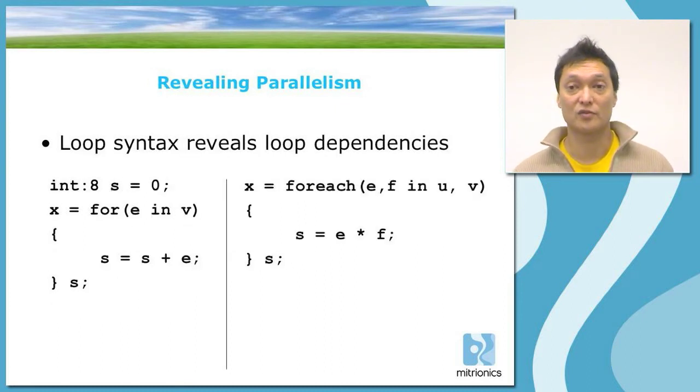Another important feature of Mitrion C is that it helps the programmer to reveal parallelism. The syntax in itself is designed to make design decisions regarding parallelism as salient as possible, to make it obvious to the programmer where different kinds of parallelism exists. So as an example, the loop syntax will reveal what kind of loop dependencies exist in your program.